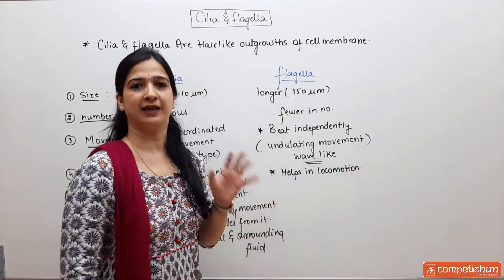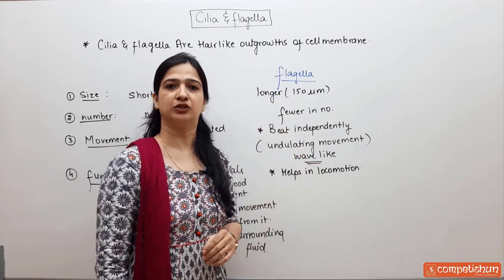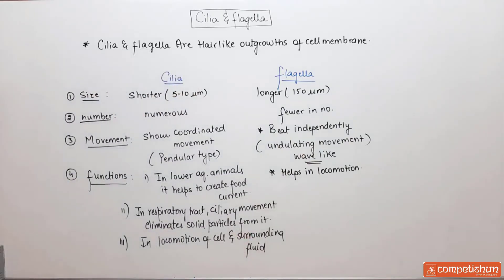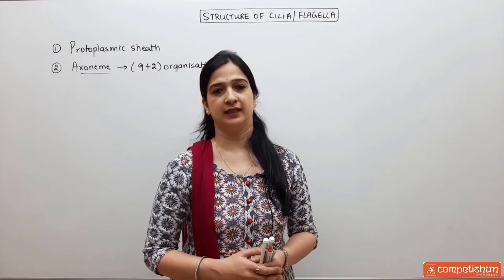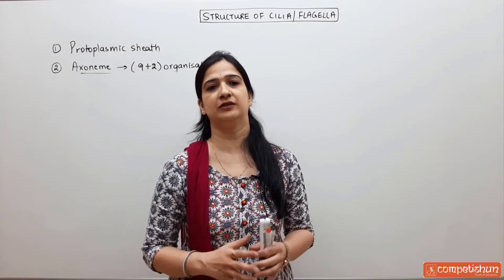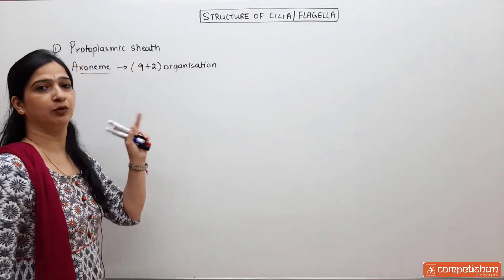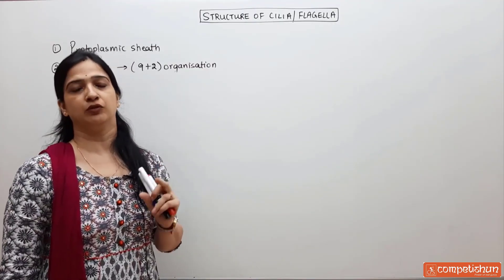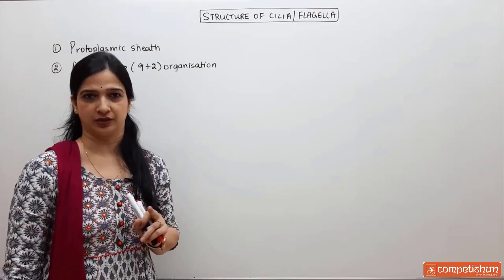This was a comparative study between cilia and flagella. Now let us look at the structure of cilia and flagella in detail, which is similar. The basic structure of the cilia and flagella is covered by the plasma membrane and is known as the axoneme. In transverse section, it shows a 9 plus 2 organization.